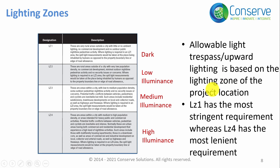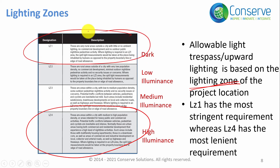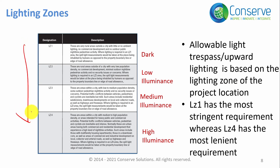The allowable light trespass limit depends on the lighting zone of the project location. If the project is in a commercial area in the city, it falls under Lighting Zone 4 (LZ4). If the project is in a forest area, it falls under Lighting Zone 1 (LZ1). The higher the lighting zone number, the more light trespass is permitted. LZ1 has the most stringent limit, while LZ4 has the highest allowable limit.